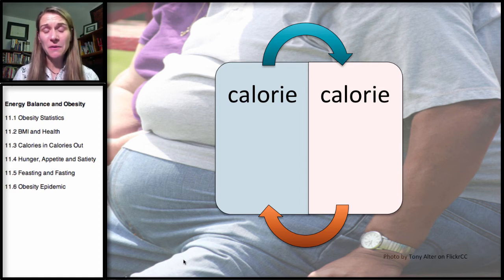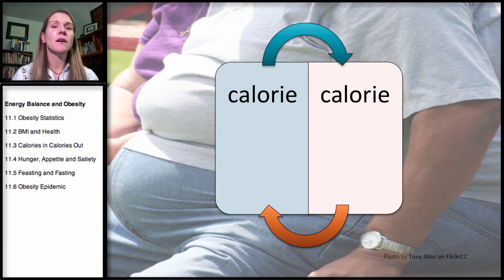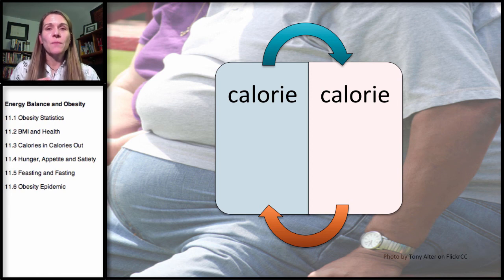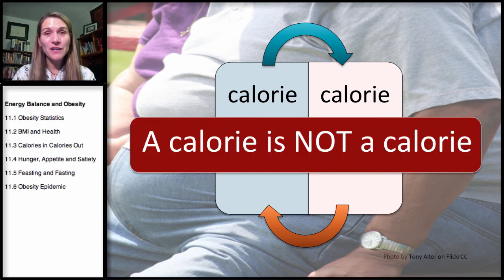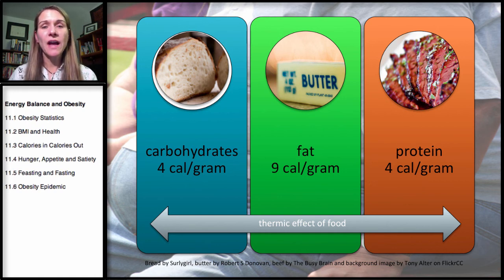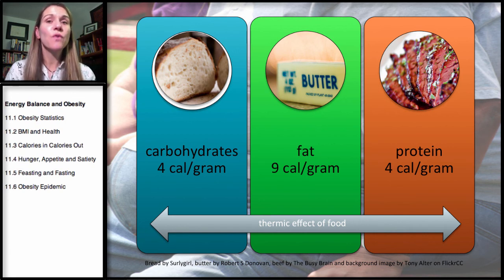A calorie is not a calorie. We might think that calories from fat, protein, and carbohydrate are equivalent, but what happens after that energy enters the body is very different. Both carbohydrates and proteins provide four calories per gram, while fat provides nine calories per gram — which drove the low-fat diet craze of the 1980s.